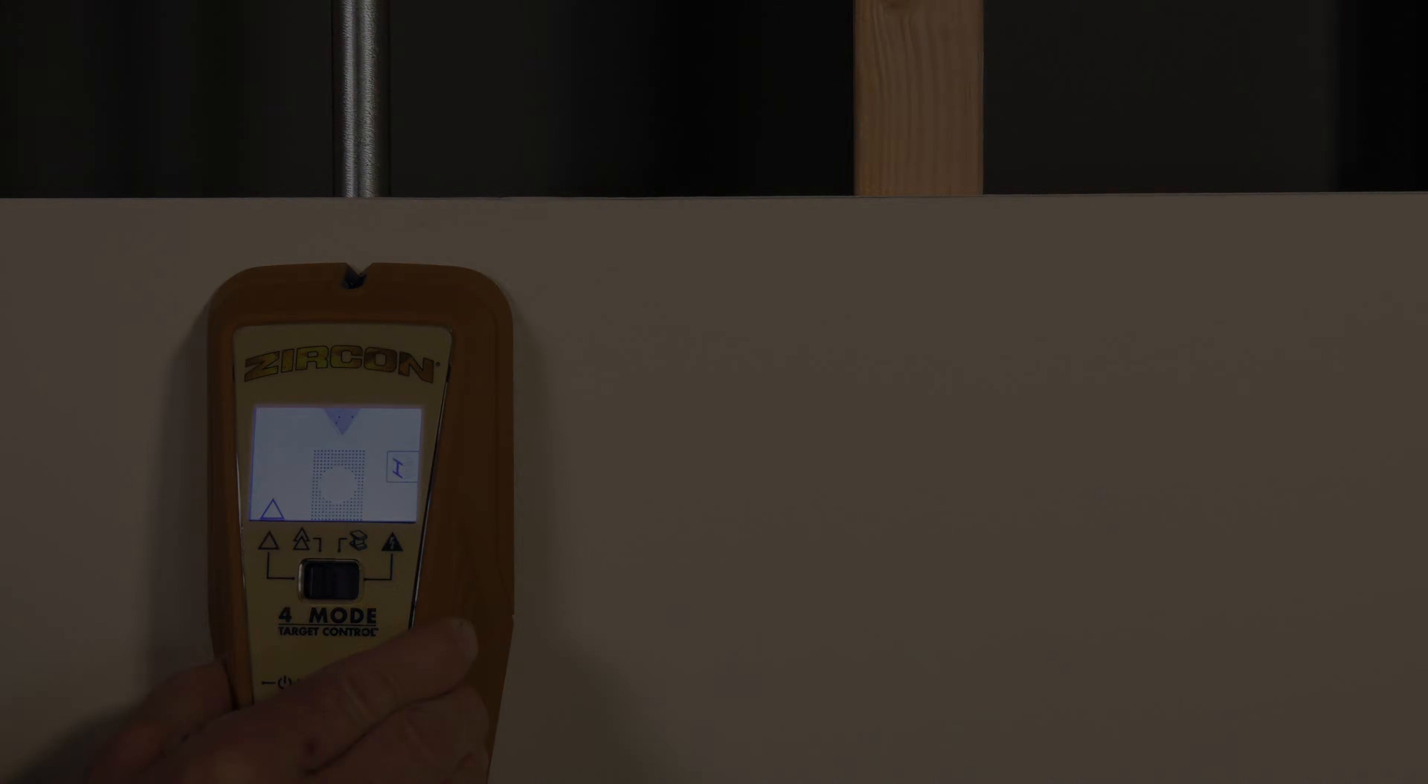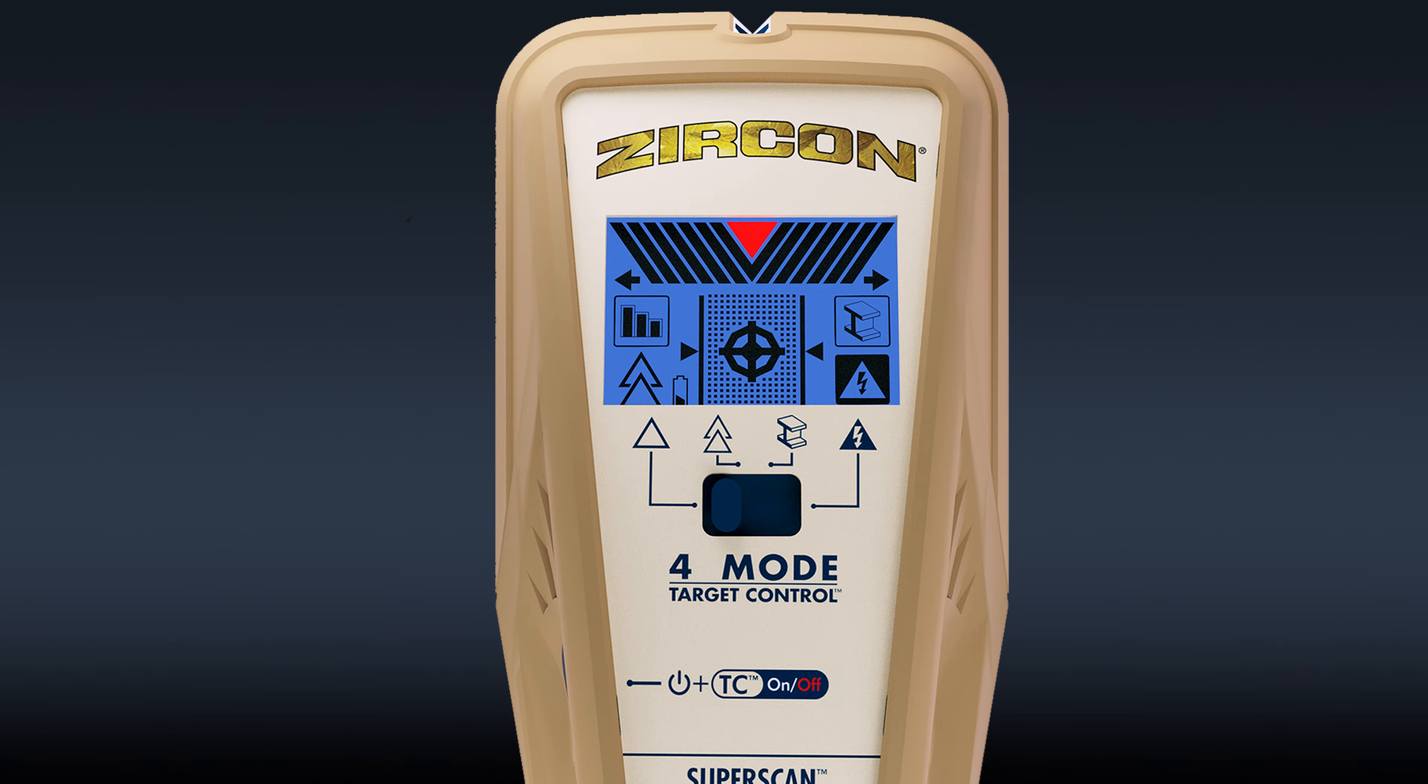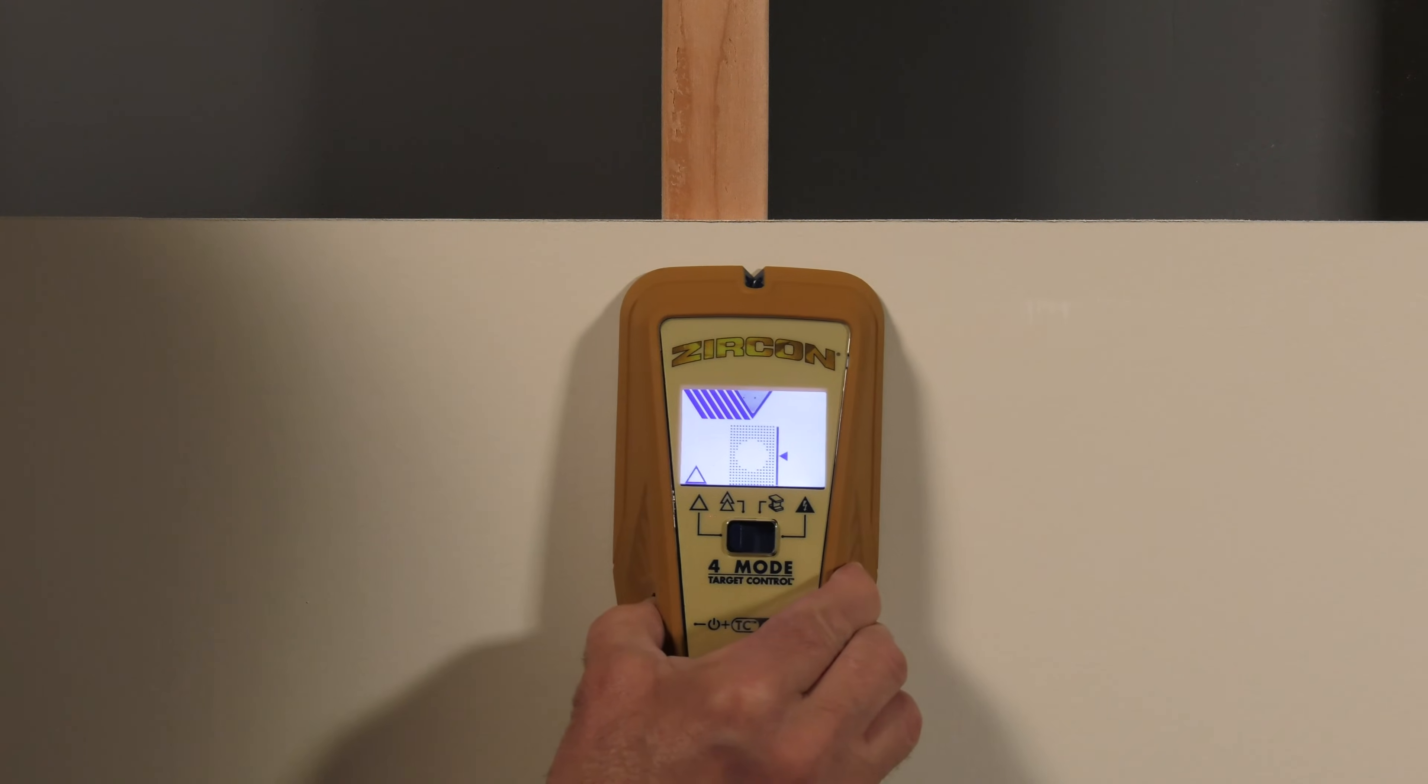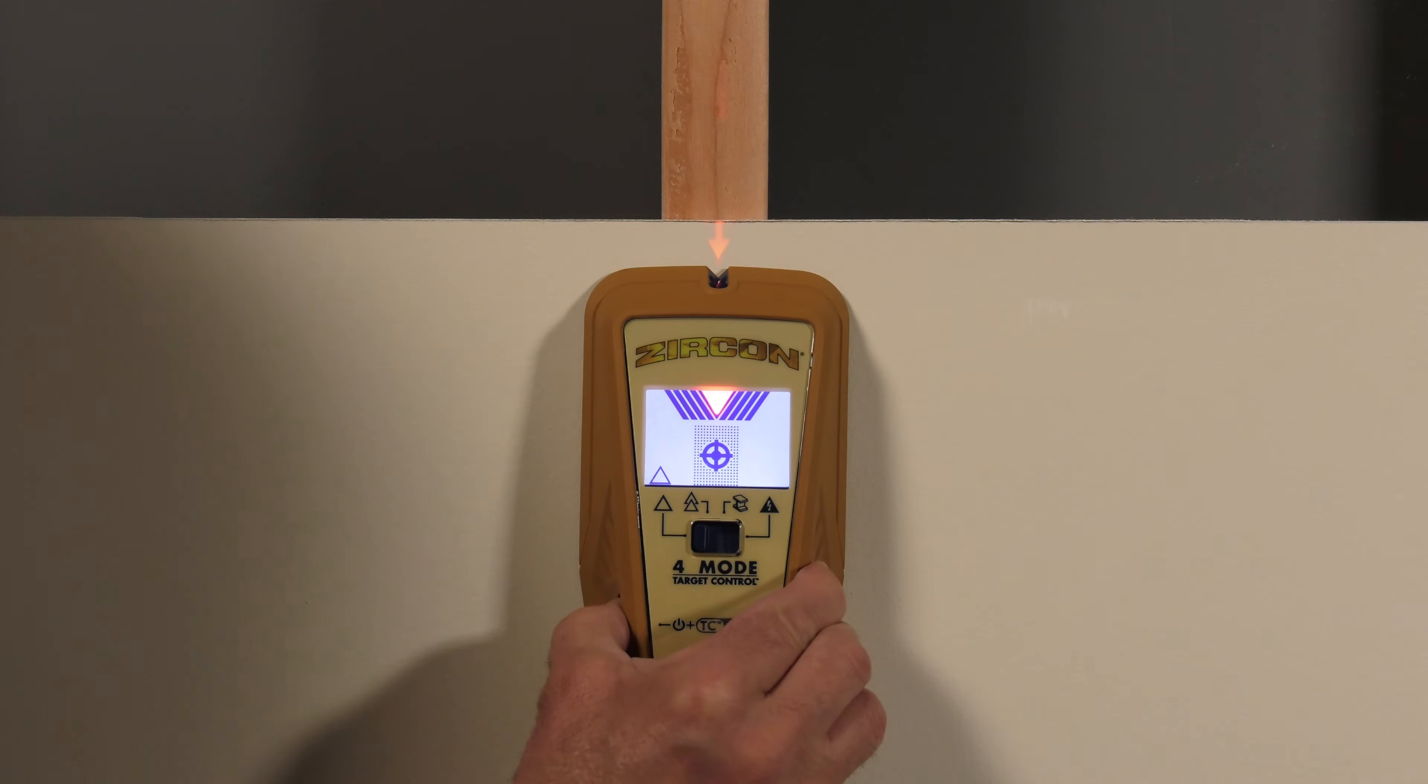The K4 features five modes. TC to find the center and edges of wood studs and not metal, up to three-quarters of an inch deep.